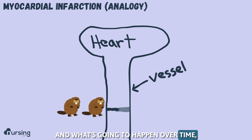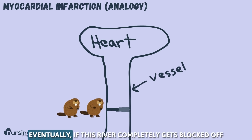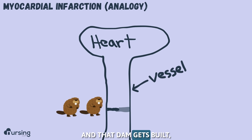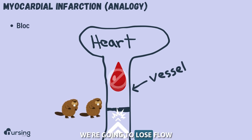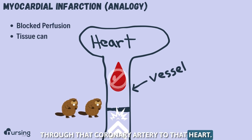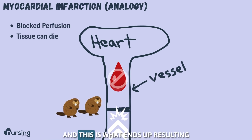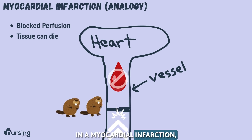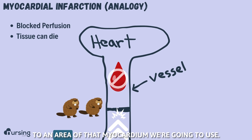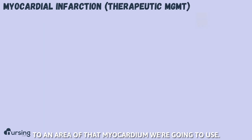What's going to happen over time: eventually, if this river completely gets blocked off and that dam gets built, we're going to lose flow through that coronary artery to the heart. And this is what ends up resulting in a myocardial infarction — a complete loss of blood flow to an area of that myocardium.